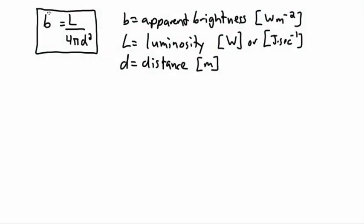You might be wondering, from this equation right here, why do we have a 4πd²? This has to do with the fact that, like we talked about before, luminosity is the star's emitted power, whereas b, the apparent brightness, is this effect of distance. So we have to have some sort of distance term.